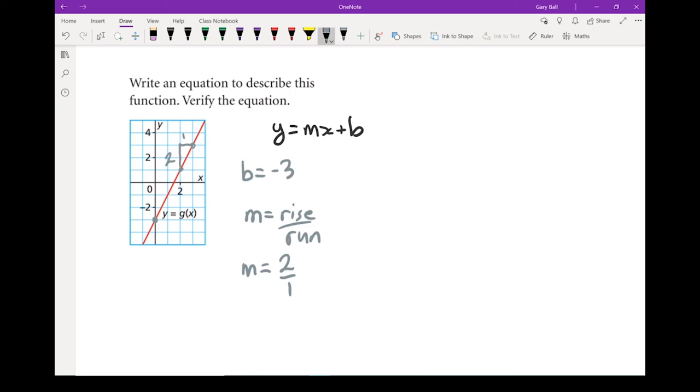Remember when we're writing a fraction, it has to be in simplest terms. This one already is. And if I have a 1 on the bottom, I don't need to write it in. If I write it in, it's not wrong, but it's wasting a little bit of time. So in this case, my slope equals 2. Let's write it into the equation. y equals, instead of the m, I'm going to put in 2x. And instead of the b, I'm going to put in minus 3. There is my equation in slope-intercept form.